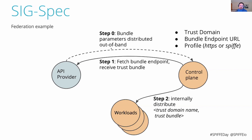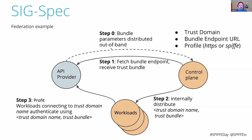With that information at the control plane, it's vital to distribute what we call a tuple — a pair of information consisting of both the trust domain and the trust bundle. Whenever a workload wants to connect with the API provider, it indexes its map by the API provider's trust domain to find the correct root key material or trust bundle. This provides tight control over which credentials are allowed for authentication of the API provider, happening in step three where workloads reach out to the API provider.